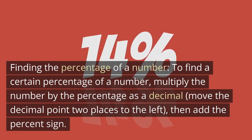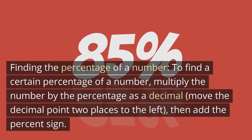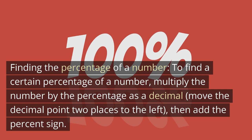Finding the percentage of a number: To find a certain percentage of a number, multiply the number by the percentage as a decimal, move the decimal point 2 places to the left, then add the percent sign.